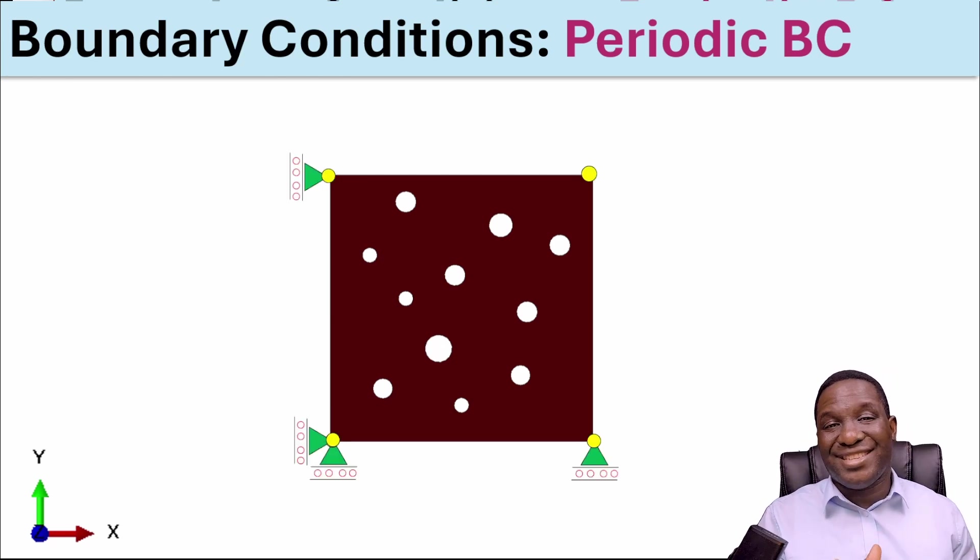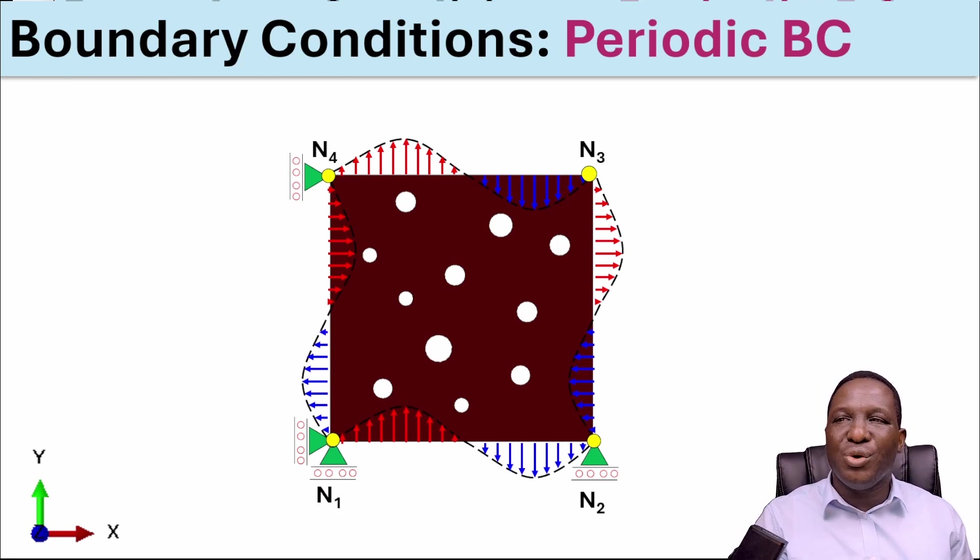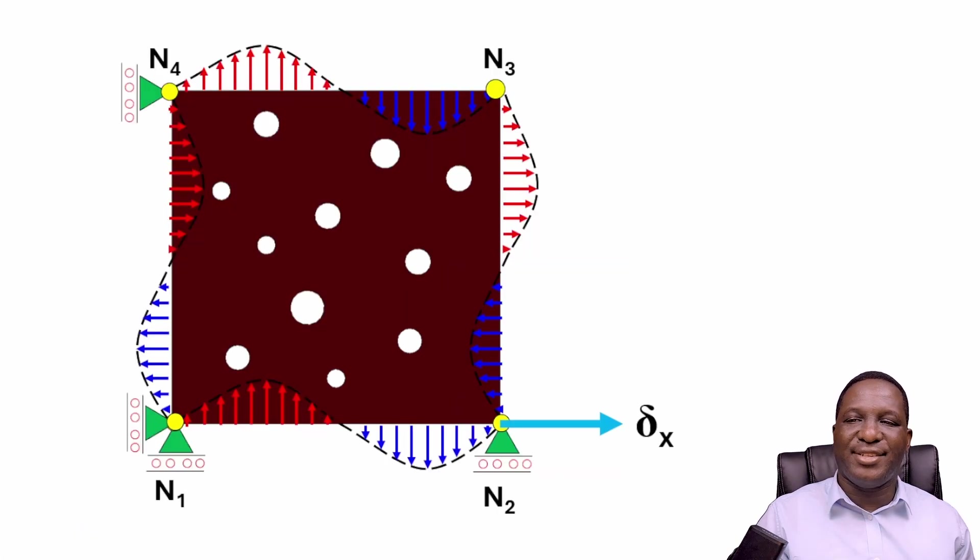The first thing is to decide how you're going to load the model to generate uniaxial tensile behavior. The approach for imposing periodic boundary conditions requires specifying the corner nodes and anchoring them. I need to apply periodic boundary condition, which is basically distributive behavior, and note the unique corner nodes: node 1, 2, 3, and 4 for the system.